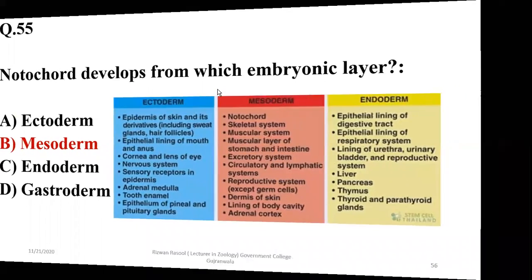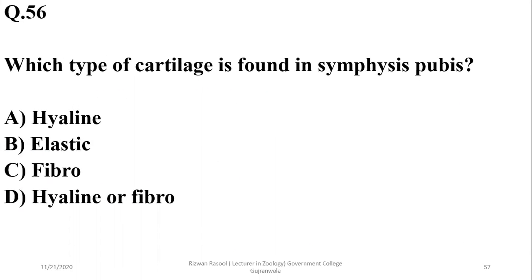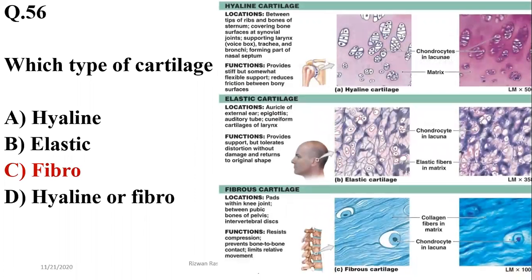Question number 56: Which type of cartilage is found in symphysis pubis? There are three basic types of cartilage. Hyaline cartilage is most abundant. Elastic cartilage is found in the ear and epiglottis. Hyaline is in joints, ribs, nose, and respiratory tract. Fibrocartilage is in the vertebral column and symphysis pubis. So the right option is C — symphysis pubis contains fibrocartilage.